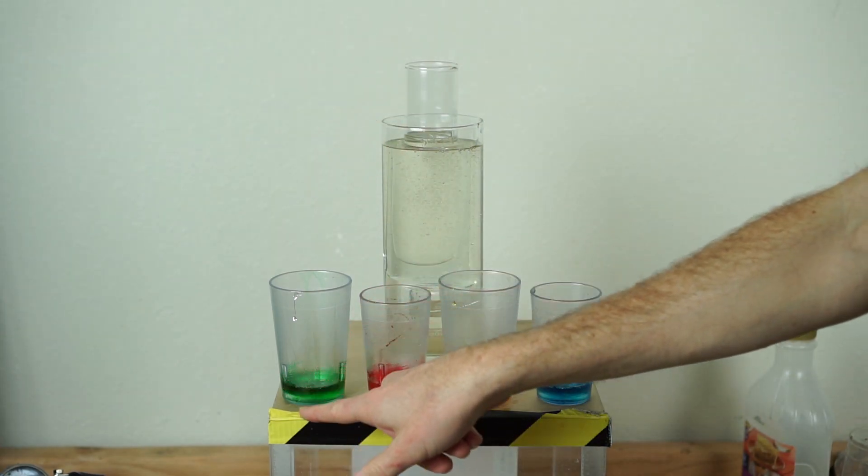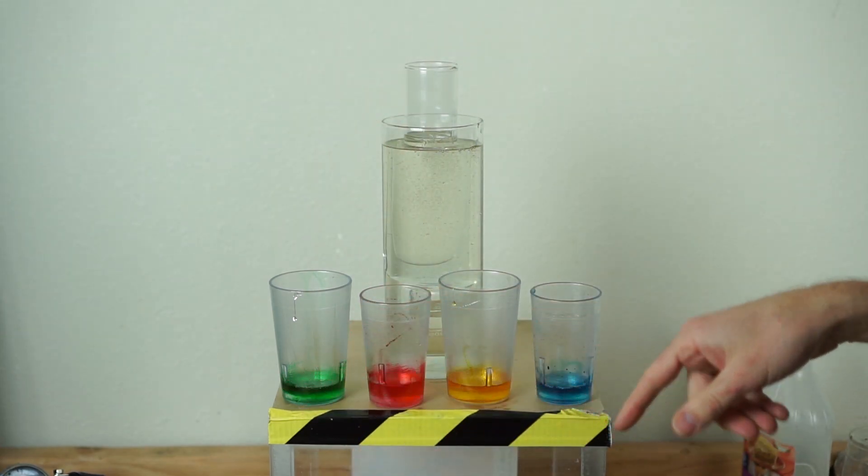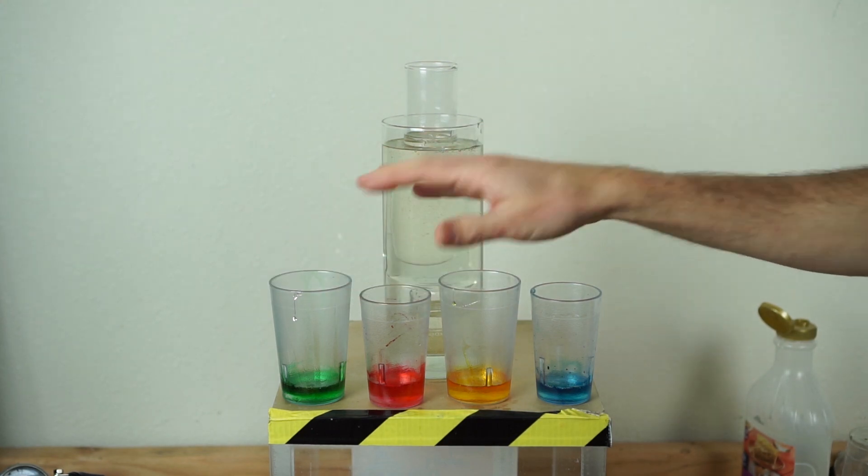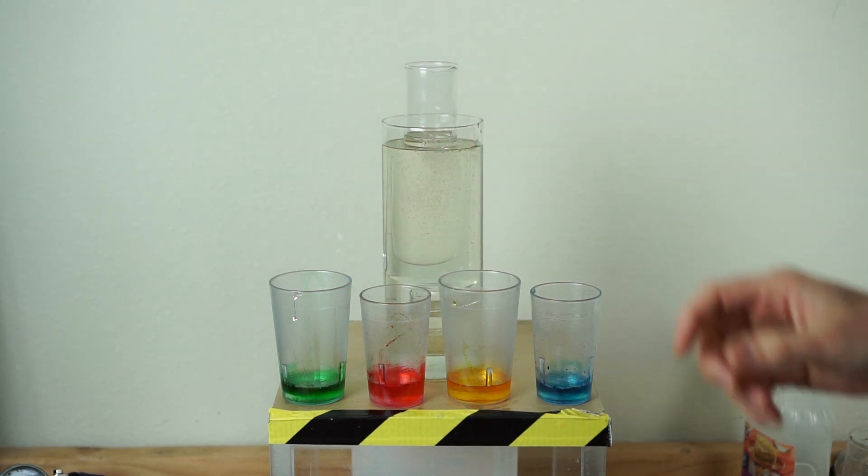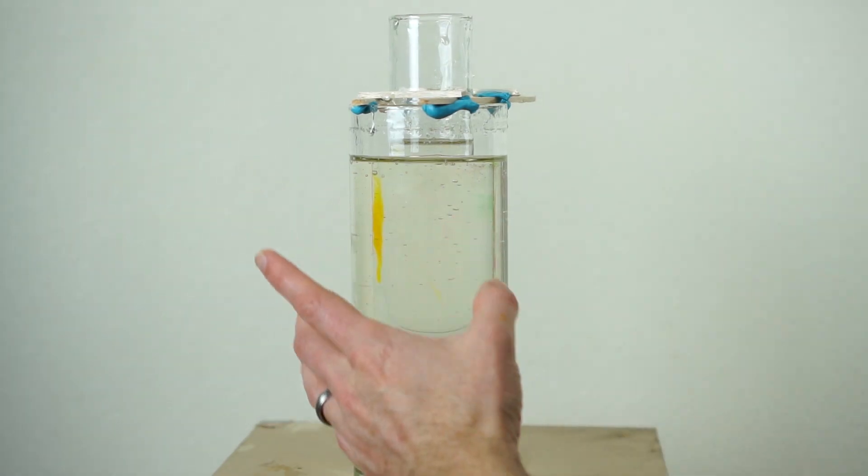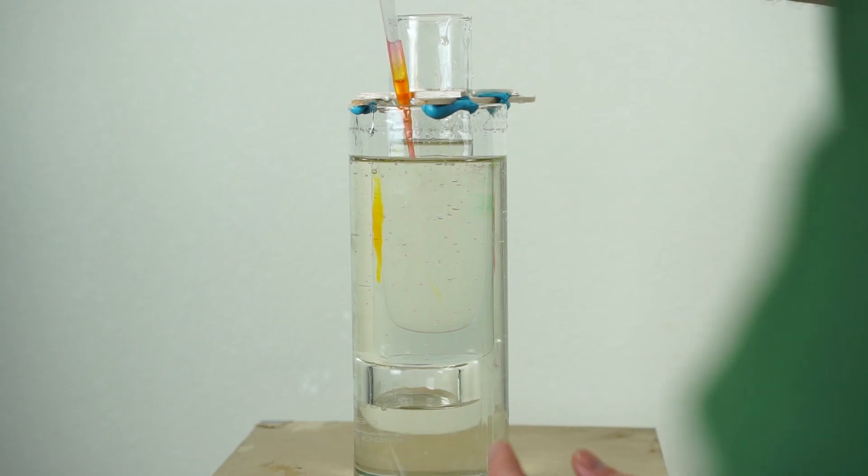And then I also have some Karo syrup dyed with different colors. So it has about the same viscosity and same density as the liquid in here. I'll put the dye in. I just put my yellow one in. Let's put red.